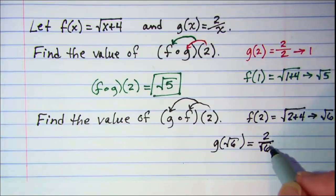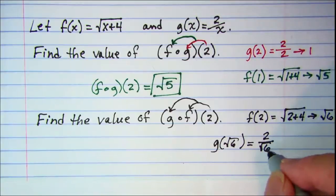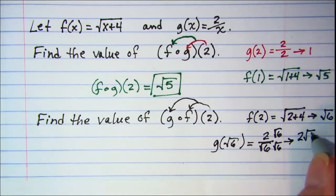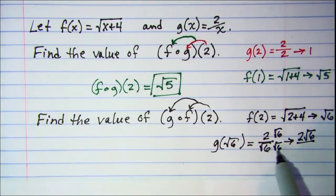Now whenever you have a radical in the denominator, remember you need to rationalize the denominator. Multiply top and bottom by √6 to do that. So this becomes 2√6 over, and then √6 times √6 is just 6.